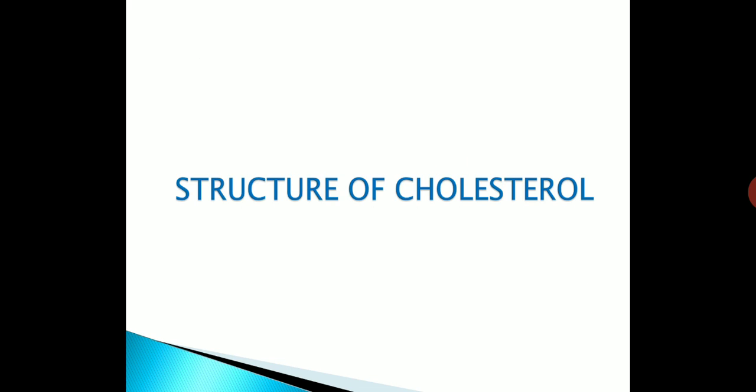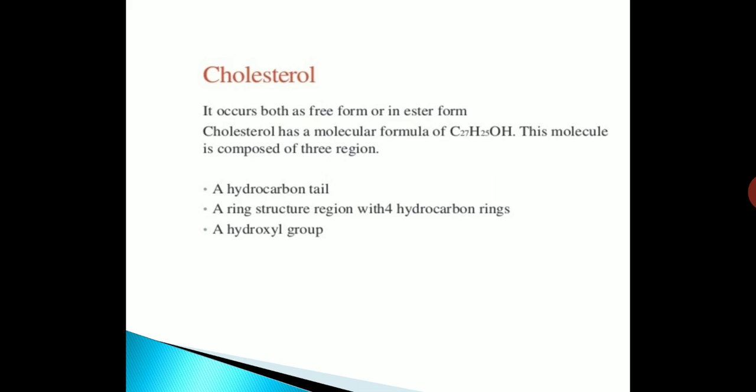Now we come to the structure of cholesterol. Cholesterol occurs as free form or in the esterified form as I have discussed earlier. Cholesterol has a molecular formula of C27H46OH. This molecule is composed of three regions. Number 1, a hydrocarbon tail. Number 2, a ring structure region with four hydrocarbon rings and a hydroxyl group.